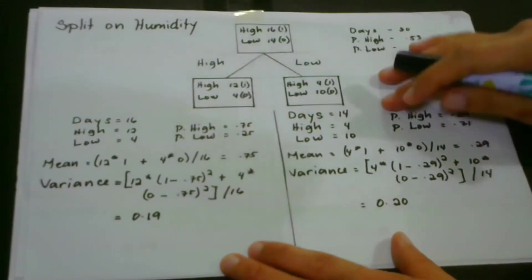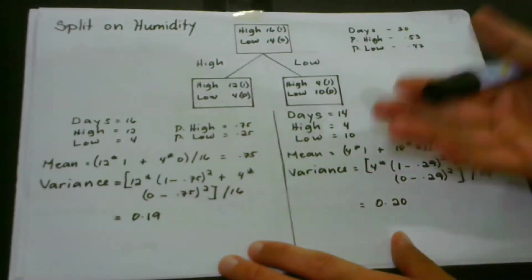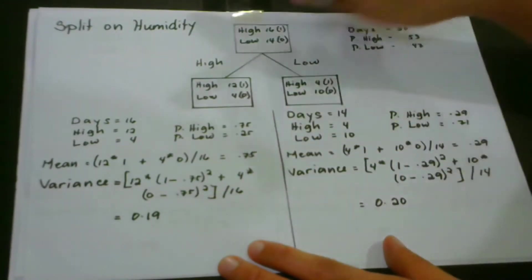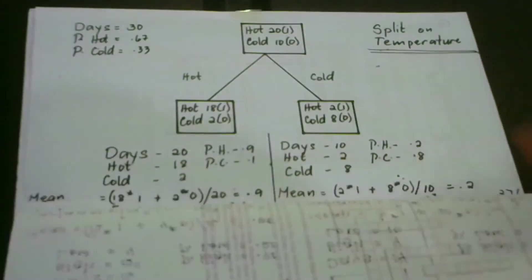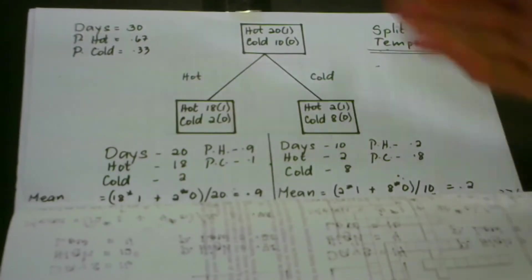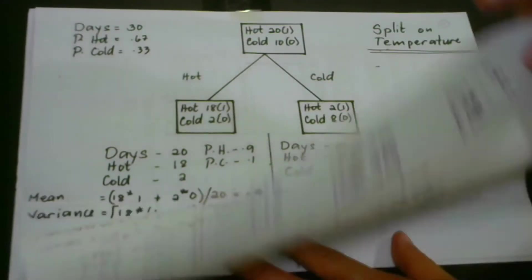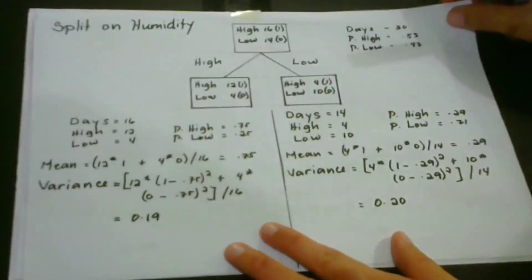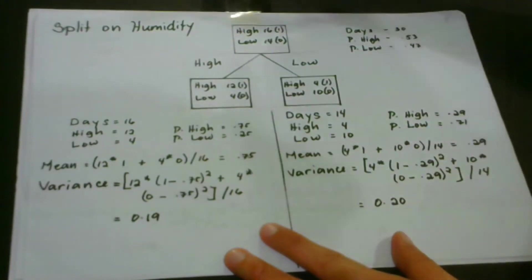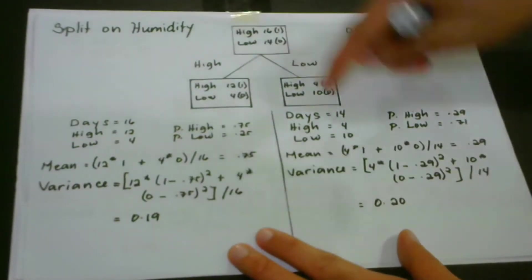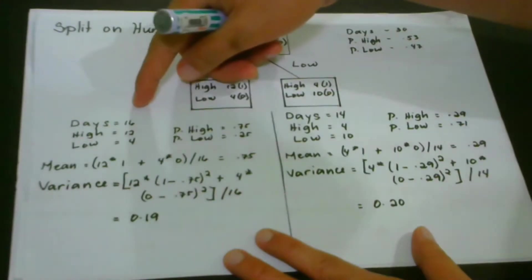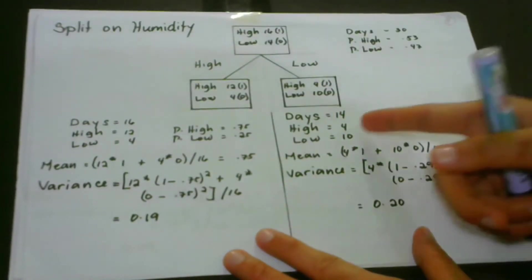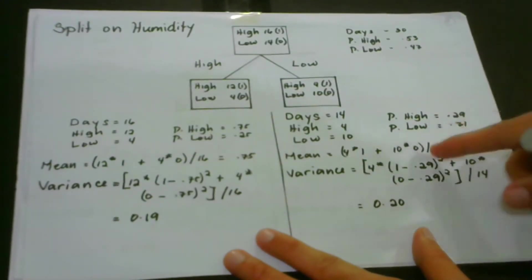We revisit the scenario where we identify the tendency of having good or bad weather, observed over 30 days. We have two splits to decide upon: a split on humidity and a split on temperature, which are our variables for predicting bad or good weather. For the humidity split, we have high humidity with 16 days — probability of high is 0.75 and low is 0.25 — and low humidity with 14 days — probability of high is 0.29 and low is 0.71.